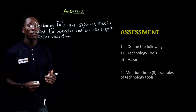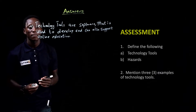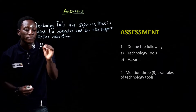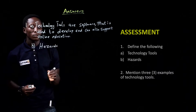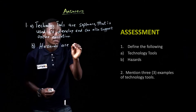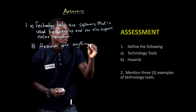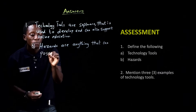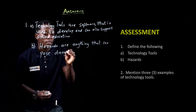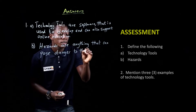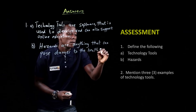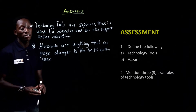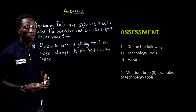Technology tools are software that is used to develop and can also support online education. Moving to part B, hazards are anything that can pose danger to the health of the user.